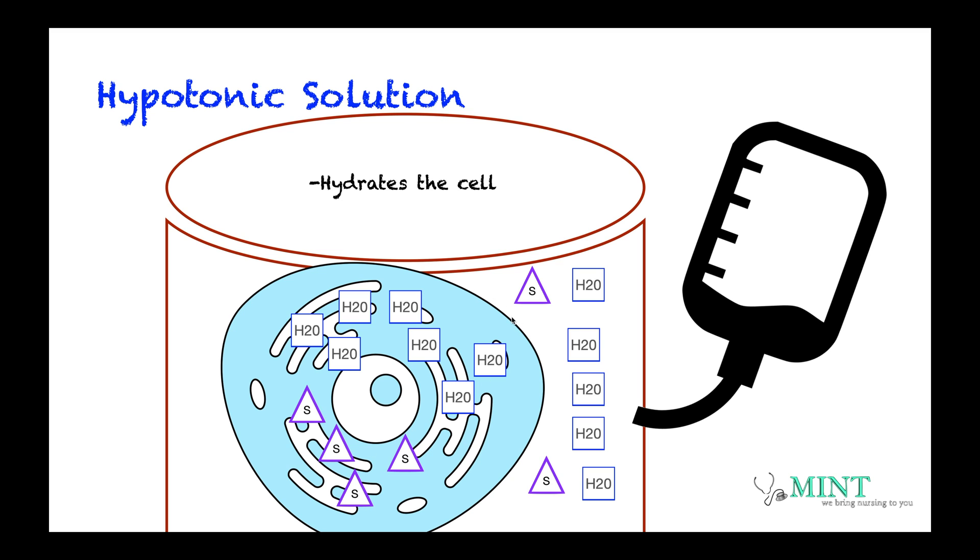So when you think about hypotonic solution, hypo, it blows the cell. Because if you give too much hypotonic solution, it is going to make the cell blow up. So that's why when we give a hypotonic solution, we give it slow. So remember, a hypotonic solution is a solution that is low concentration. Hypo, low, and it hydrates the cell. It basically blows the cell. It makes it bigger.